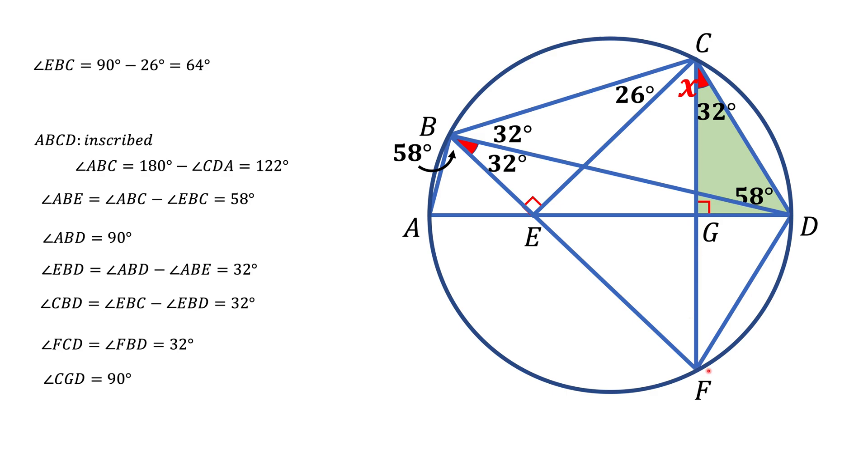Now we can see that point F is the reflection of point C over the diameter AD. Therefore, CG should equal FG. That's one way to show it. Another way is to notice that the center of the circle, which lies on diameter AD, also has to lie on a line perpendicular to secant CF and goes through the middle of that segment.